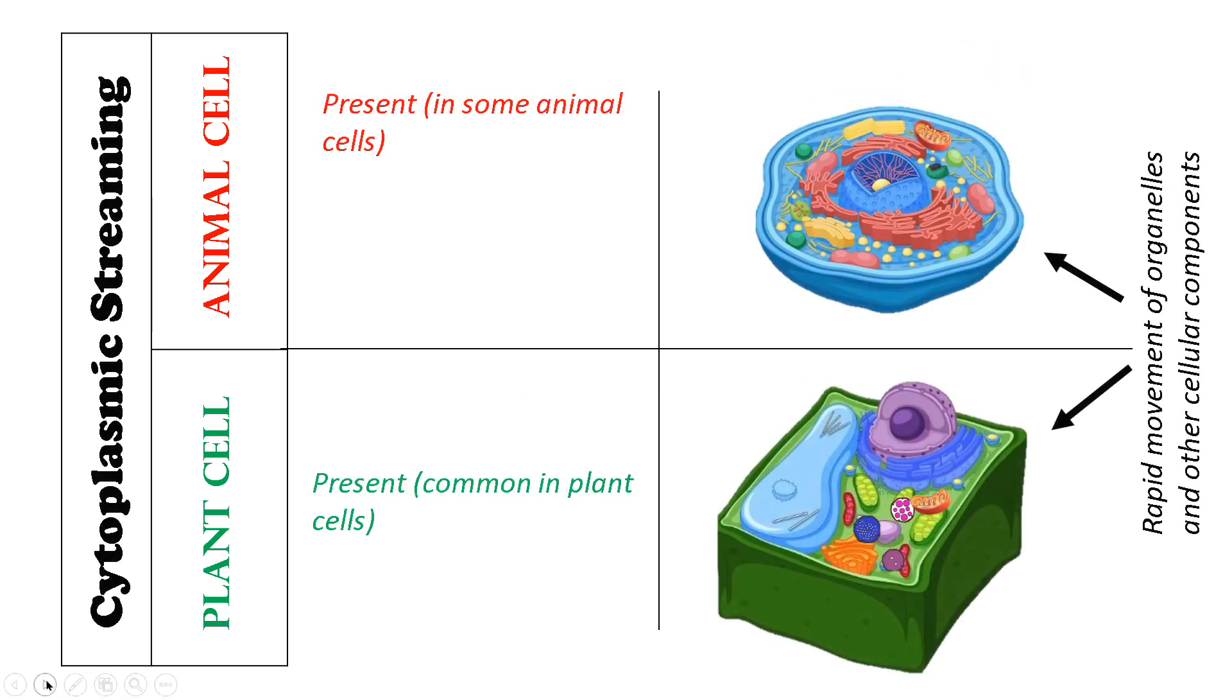The next difference between plant and animal cells is about cytoplasmic streaming. Cytoplasmic streaming is the rapid movement of organelles and other cellular components of the cell. Cytoplasmic streaming is present in some animal cells, whereas it is very common in plant cells.